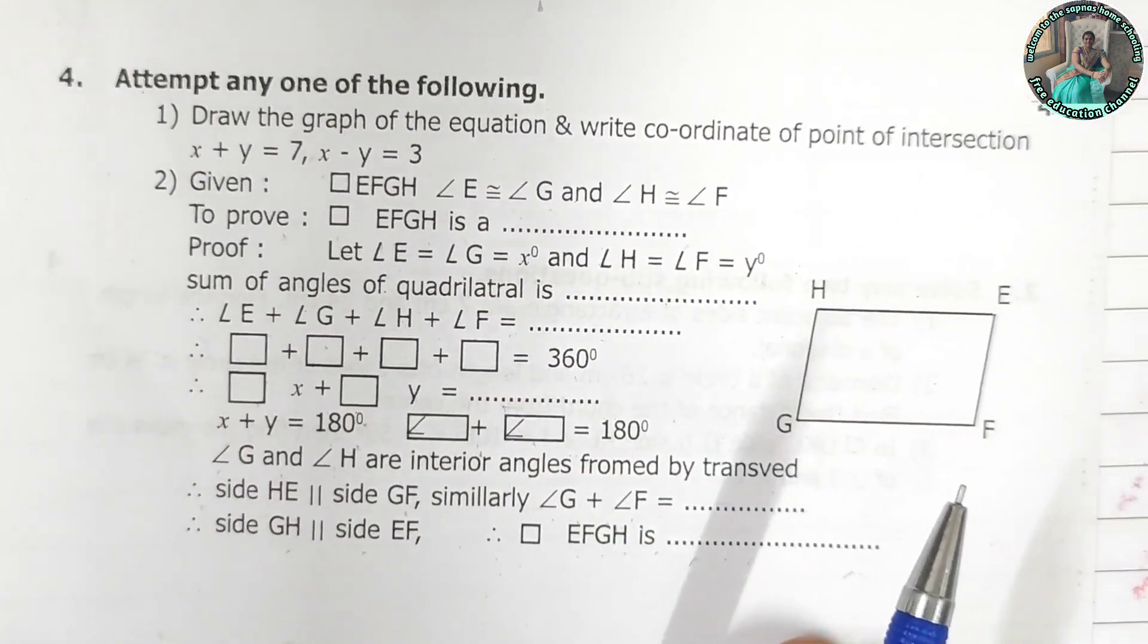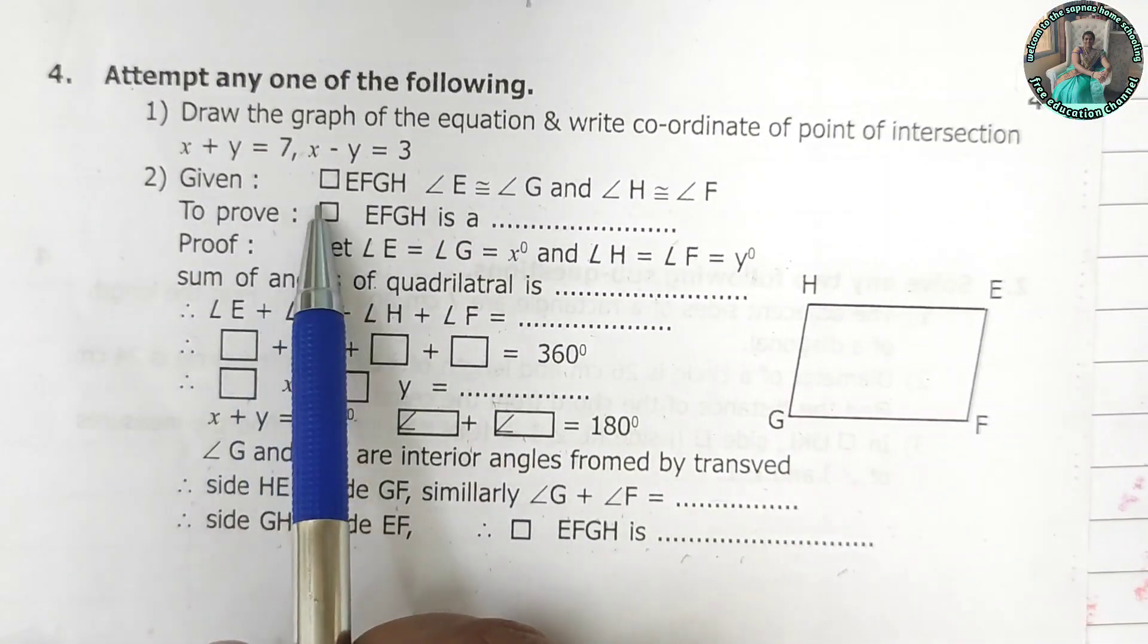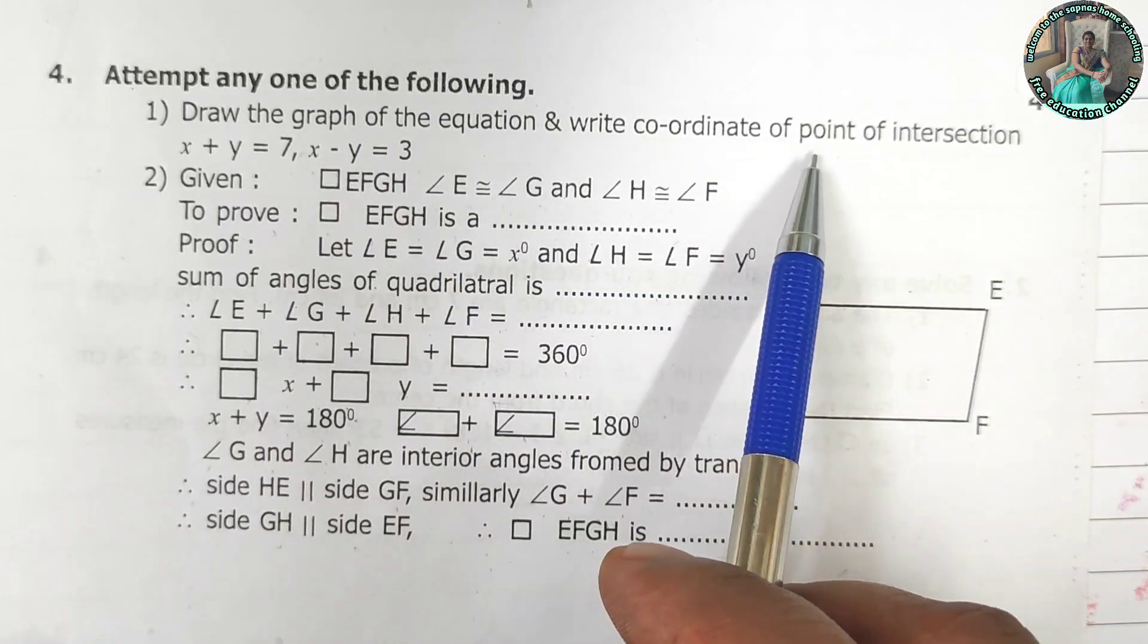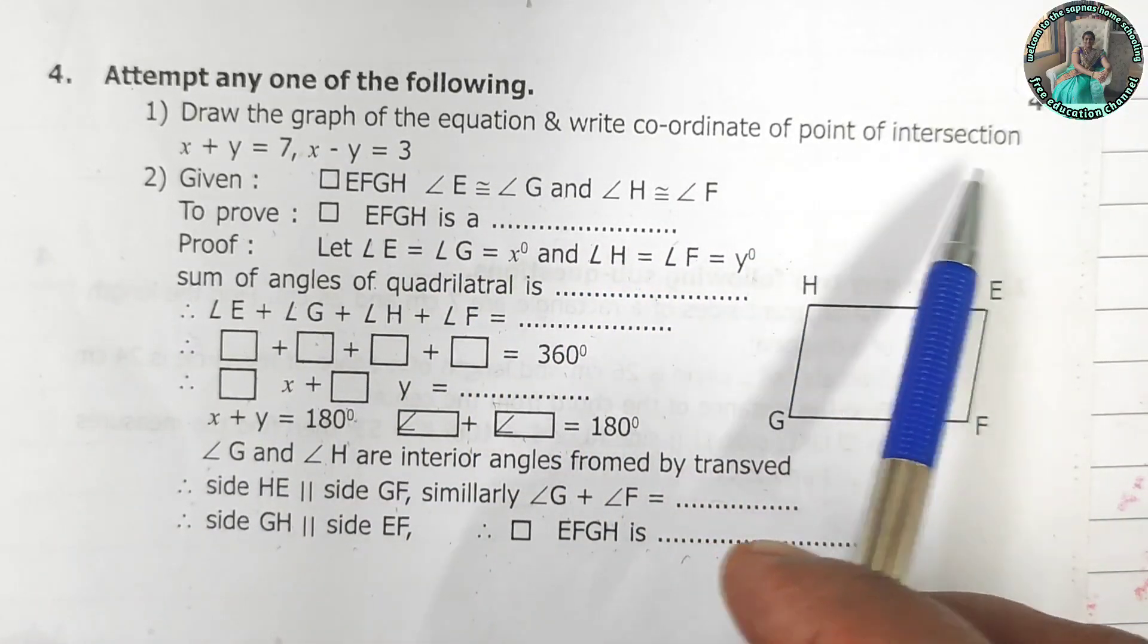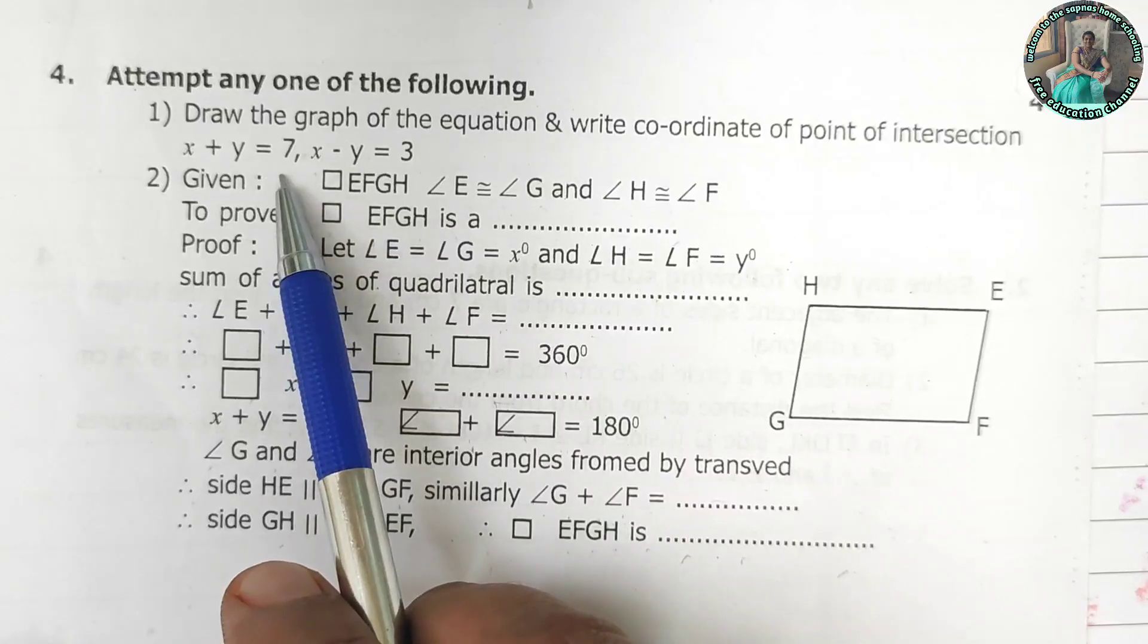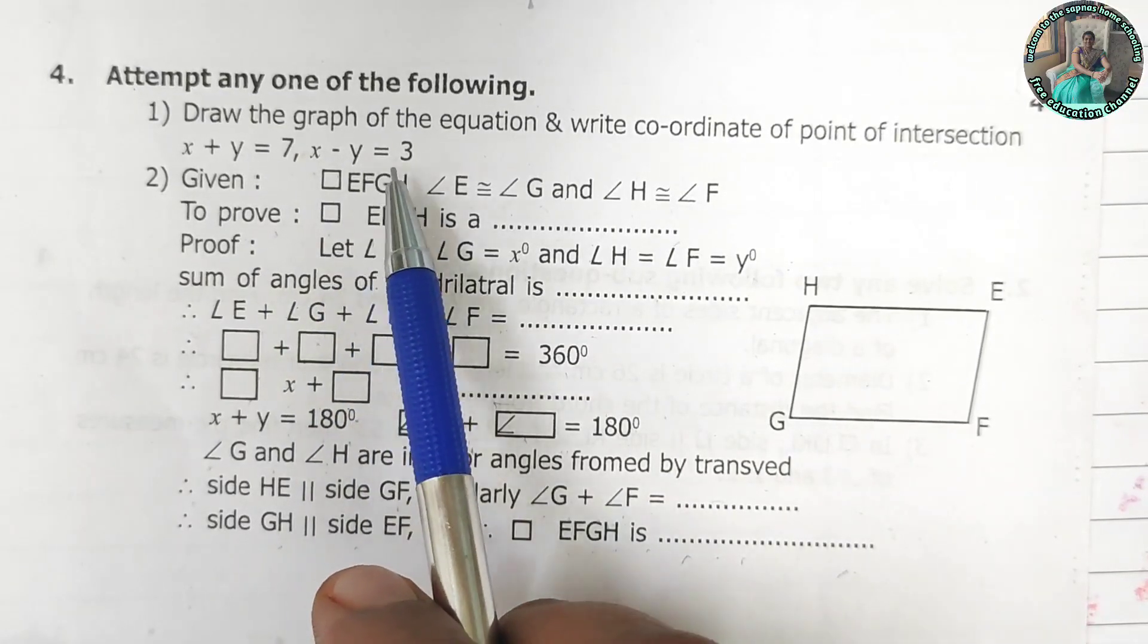Now question 4. Draw the graph of the equation and write coordinate of point intersecting x plus y is equal to 7 and x minus y is equal to 3.